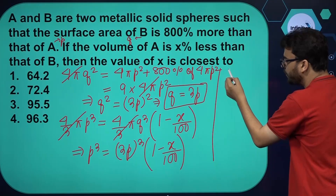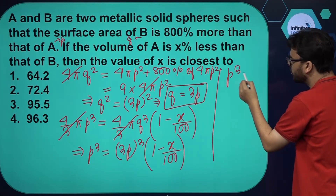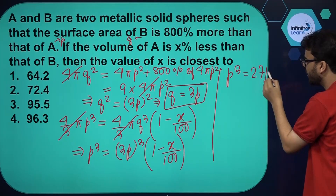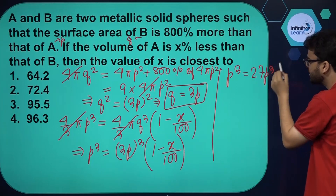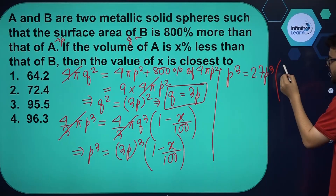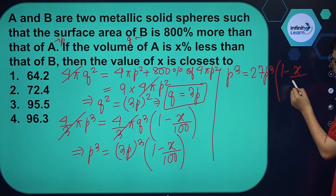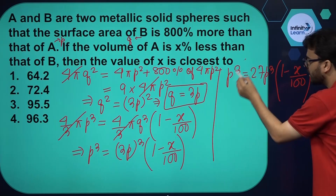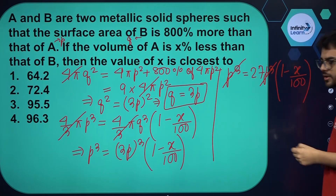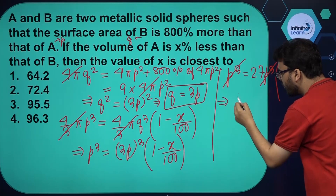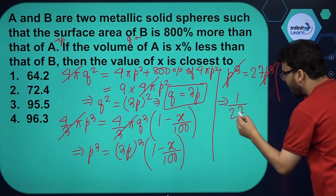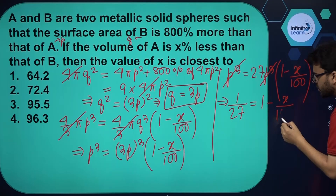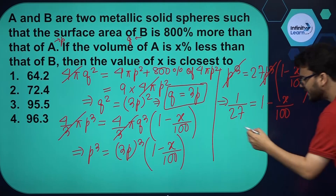Simplifying: P³ = 3 × 3 × 3 × P³ × (1 - x/100), which is 27P³ × (1 - x/100). We can cancel out P³ from both sides. Therefore we get 1/27 = 1 - x/100.